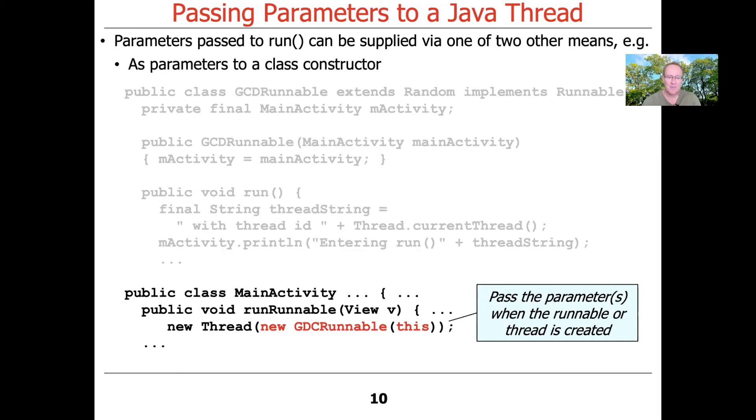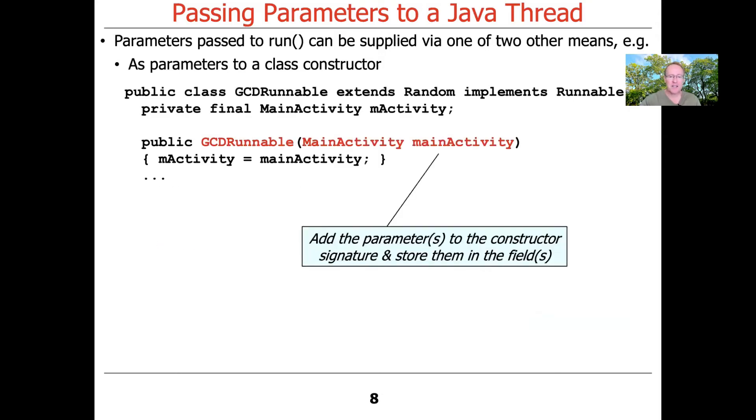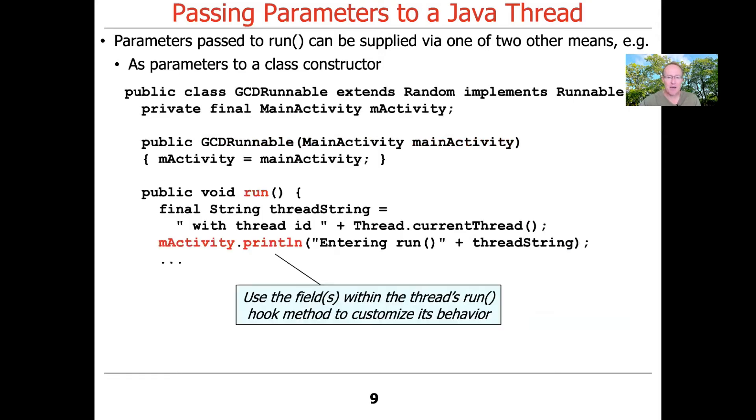It's the name of the main activity, which of course is of type main activity. And if you take a look up here, you can see that that's what's passed in to the GCD runnable, a main activity object.